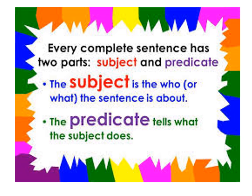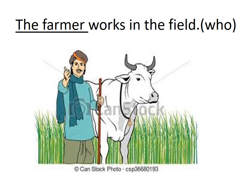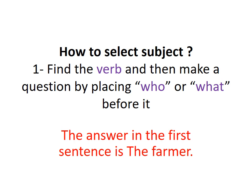Let's look at subject first. 'The farmer works in the field.' The question is: who works in the field? The answer is the farmer — the person who does the action is the subject. To find the subject, there is one ground rule: first find the verb, then make a question by placing 'who' or 'what' before it. The verb is 'works,' so ask: who works in the field? The farmer.